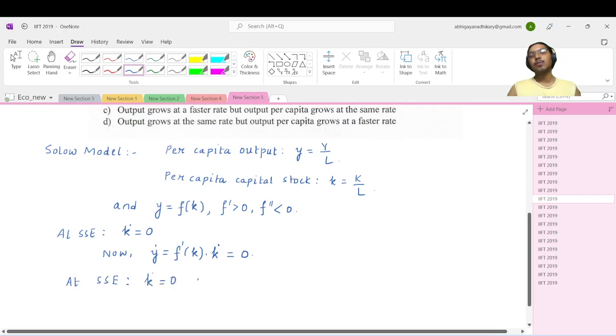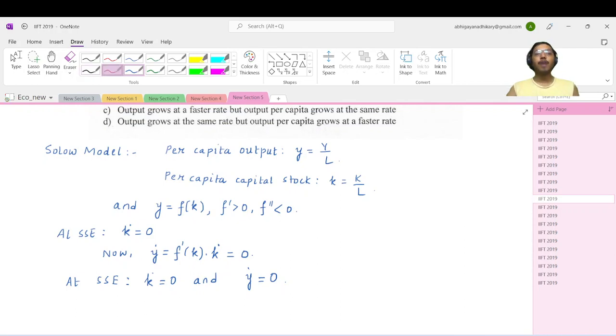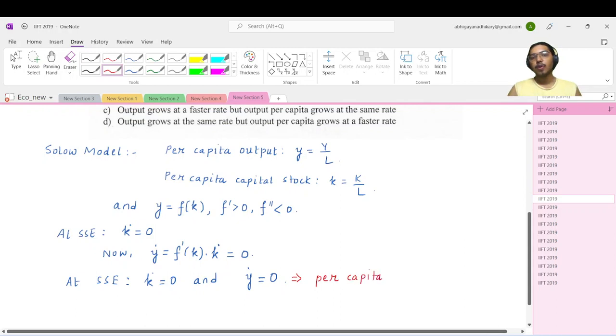No matter what the parameters of the Solow model are - n, s, etc. - small y dot continues to be zero. That means your per capita output growth remains the same.